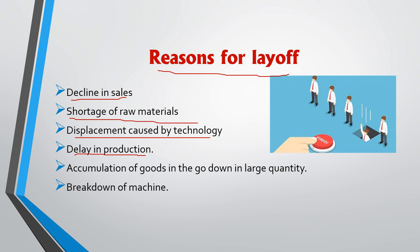Delay in production means it is not required to deliver at this time, so you can lay off the employees. Accumulation of goods in the godown in large quantities — as there is already stock in the godown, we do not need to manufacture other goods, so we can give layoff to the workers. Then breakdown of machinery — because machineries are broken down, employees will not work on that machine, so the better way is to have layoff.